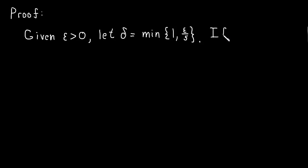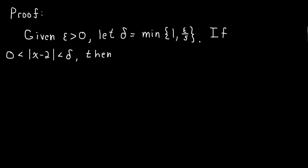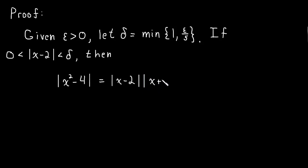Now we need to show that if zero is less than the absolute value of x minus two is less than delta — so if x is within delta units of two — then what do we know? As long as x is in that interval, the absolute value of x squared minus four equals the absolute value of x minus two times the absolute value of x plus two. This is less than the absolute value of x minus two times five, because x plus two is less than five.